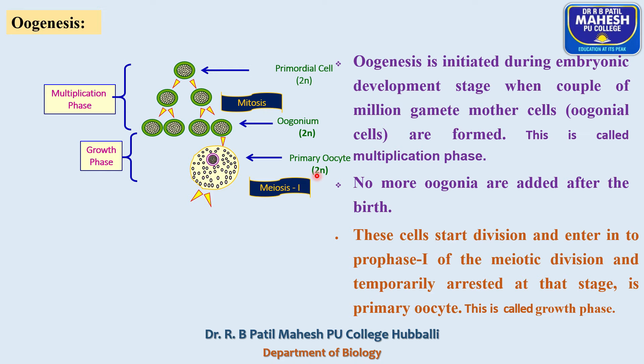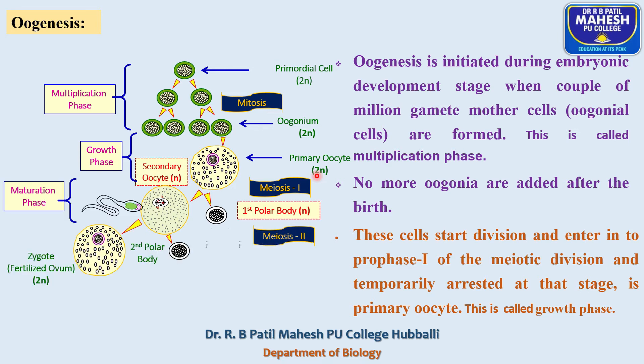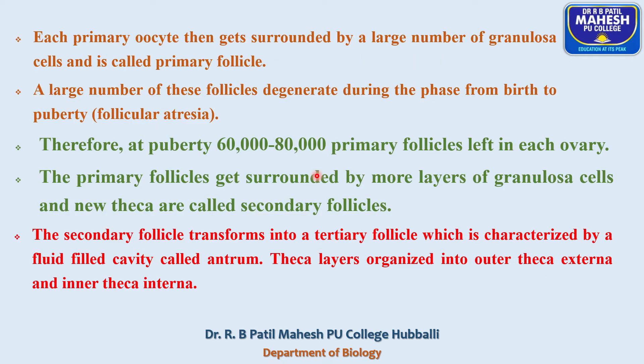One contrasting difference between primary follicle and secondary follicle: in the primary follicle, the primary oocyte is surrounded by a single layer of granulosa cells — such cells are called primary follicles.